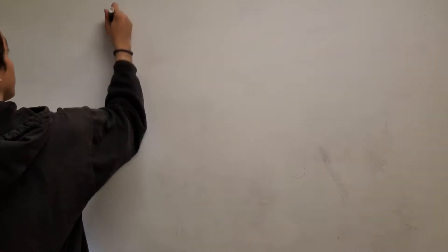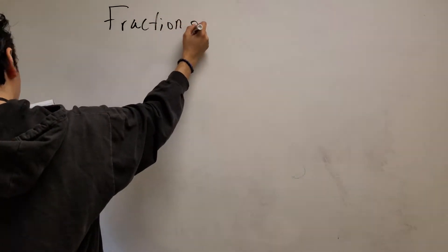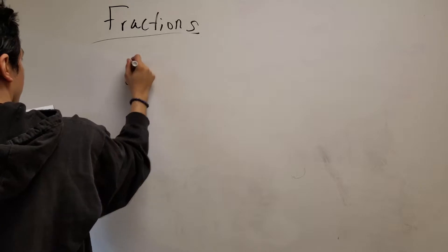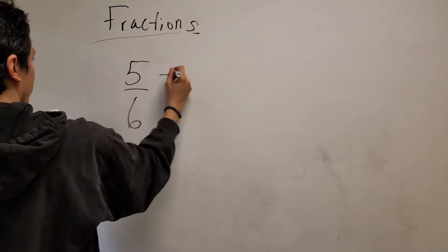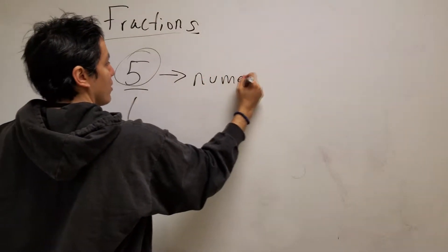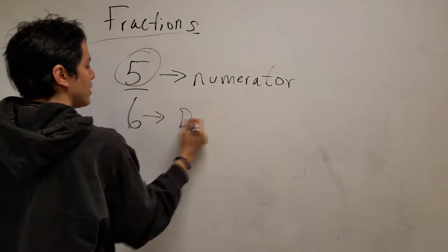Let's understand the basic of what a fraction actually is. Fractions - let's just take 5 over 6. We understand the top number represents the numerator and the bottom number represents the denominator.